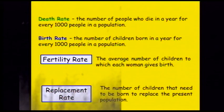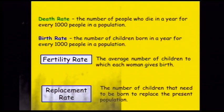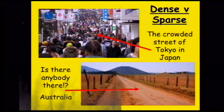The fertility rate is the average number of children that every woman has in a country. For example, the fertility rate in the UK is going to be much lower than it is in a country like Kenya. The replacement rate is the number of children that need to be born in order to replace the present population who will die.